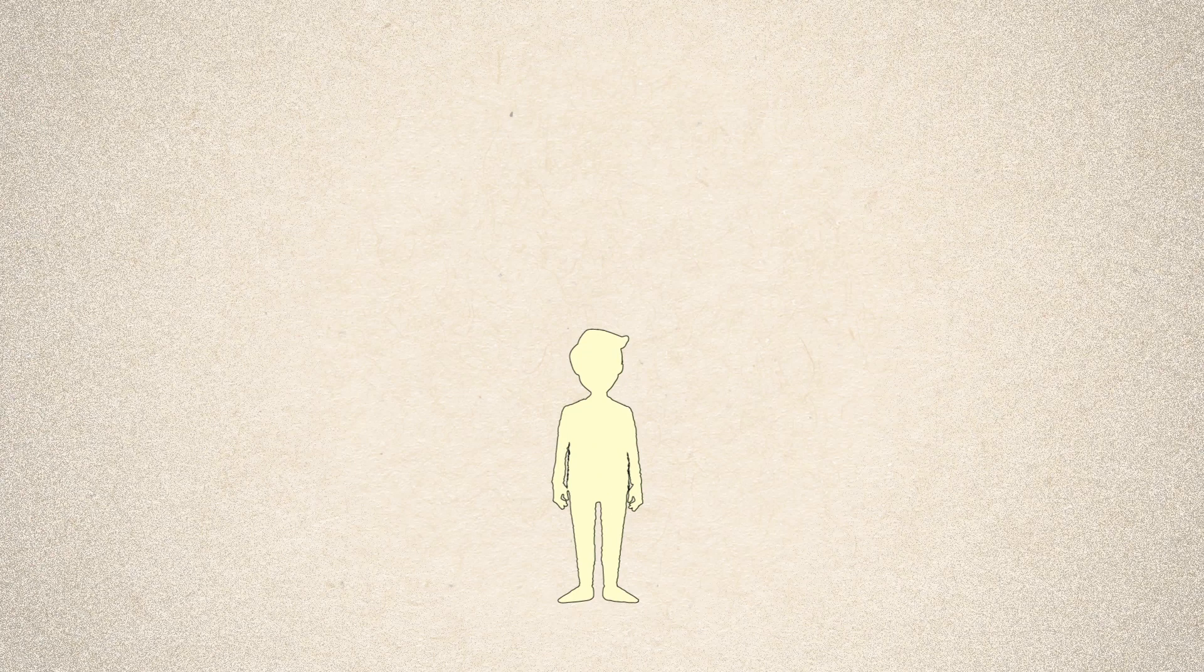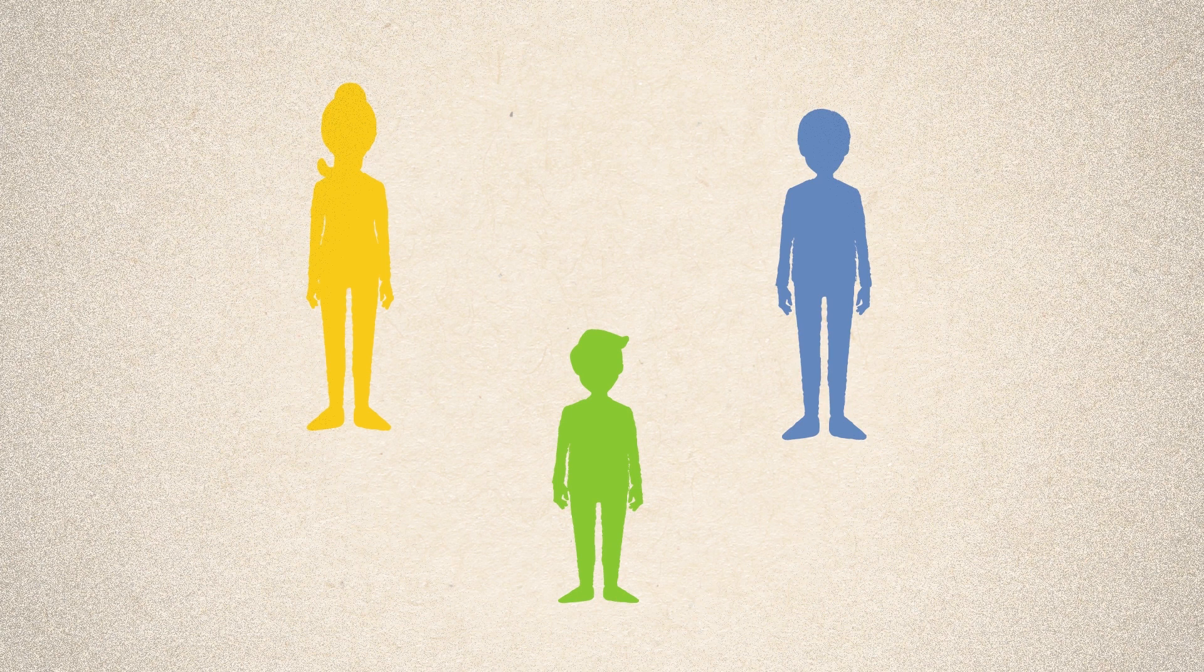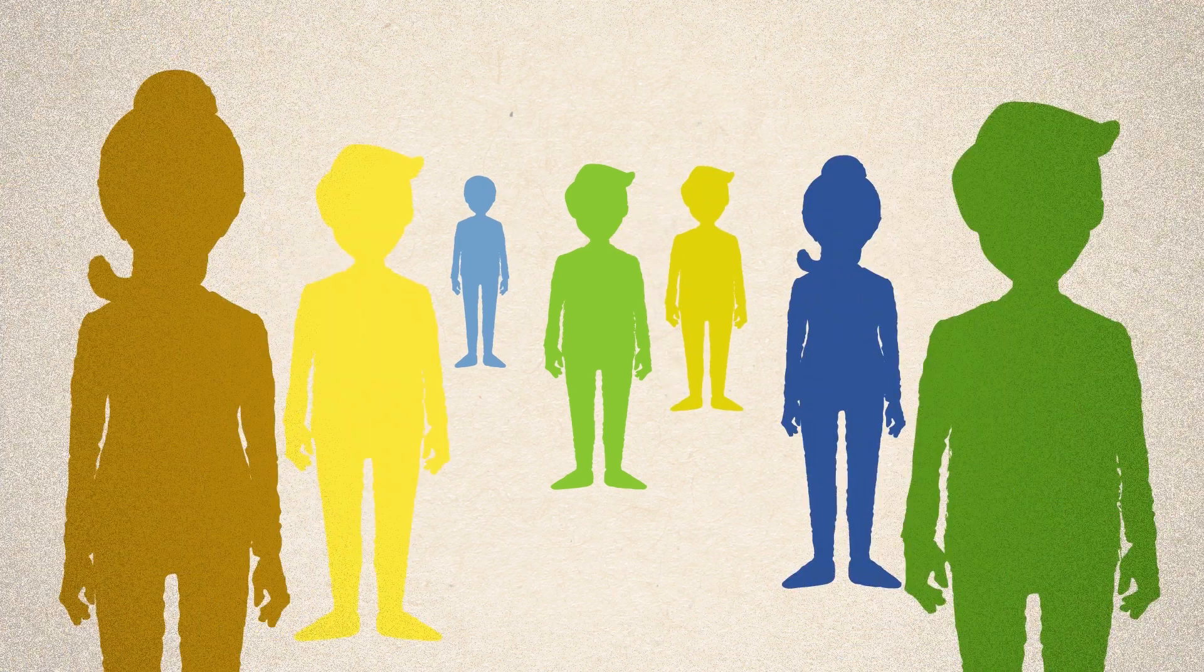You have two copies of most of your genes, one from your mother and one from your father. So you can inherit variants from either or both sides of your family. Some variants can affect your health and the health of your family.